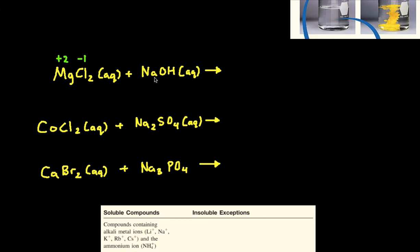Sodium is in the first column of the periodic table, so it's going to have a positive 1 charge. And then hydroxide is a polyatomic ion with a negative 1 charge.